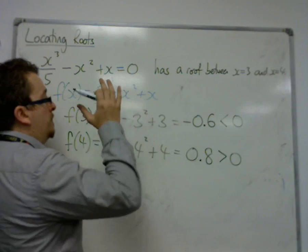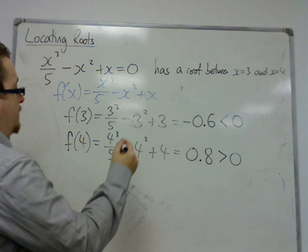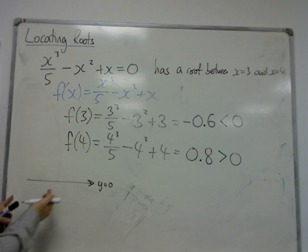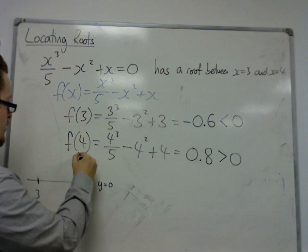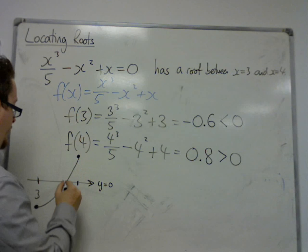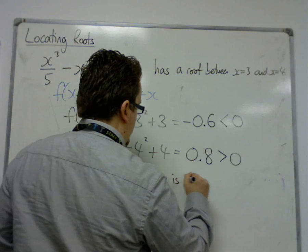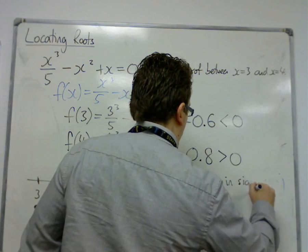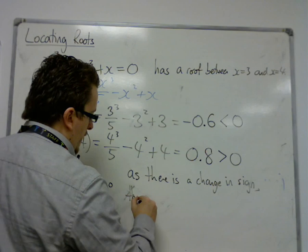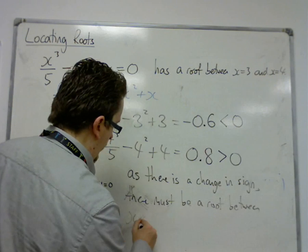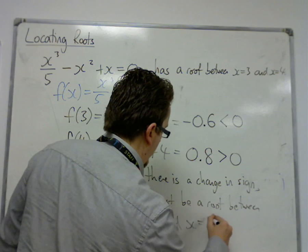In any of these types of questions, you must plug in the values. We can see that if this is where y equals 0, where f is 0, the x-axis, then for our initial point, for 3, we had minus 0.6, which is down here. And then for 4, we had 0.8, which is up here. So the curve must cross the x-axis between 3 and 4. As there is a change in sign, there must be a root between x equals 3 and x equals 4.